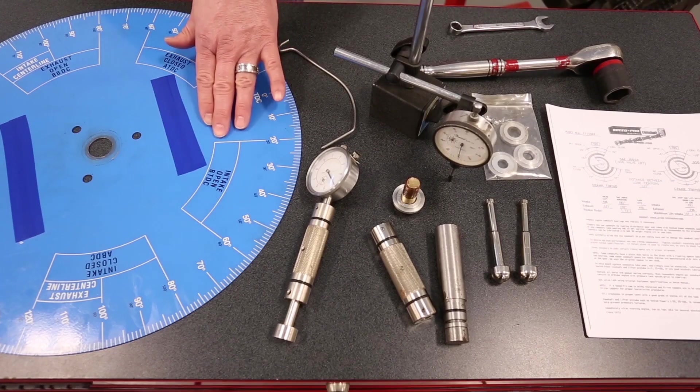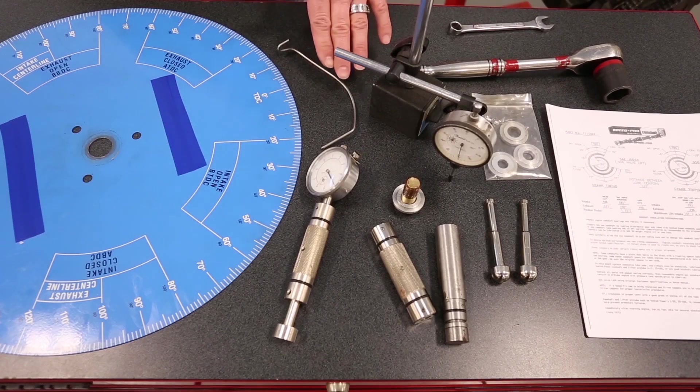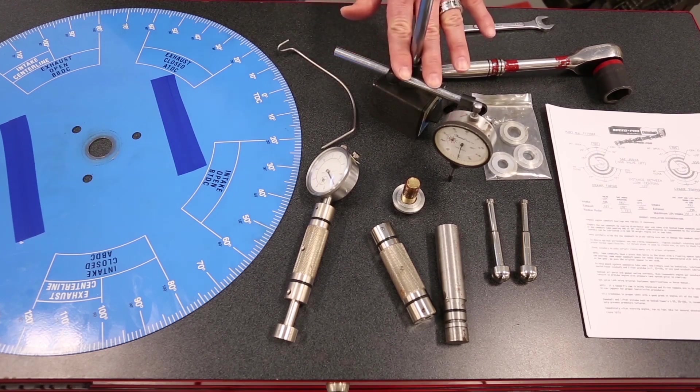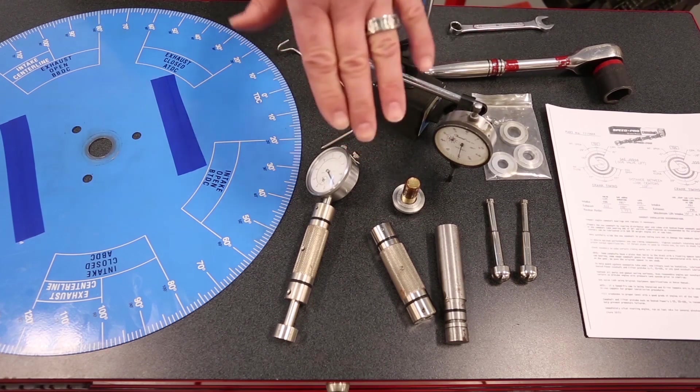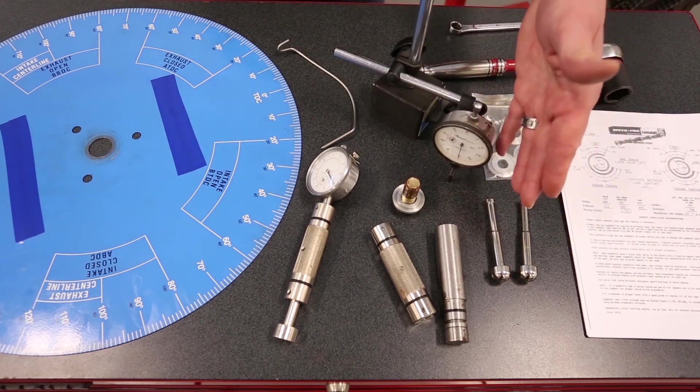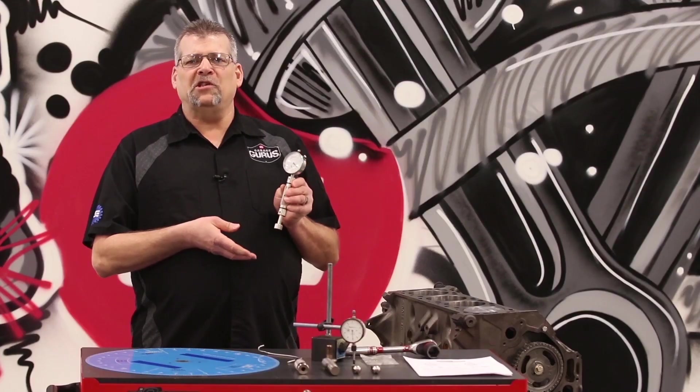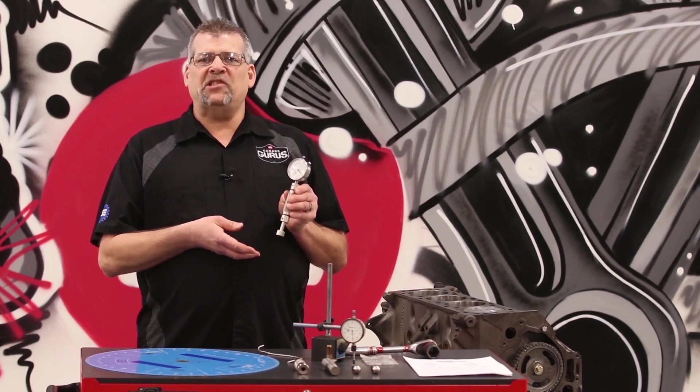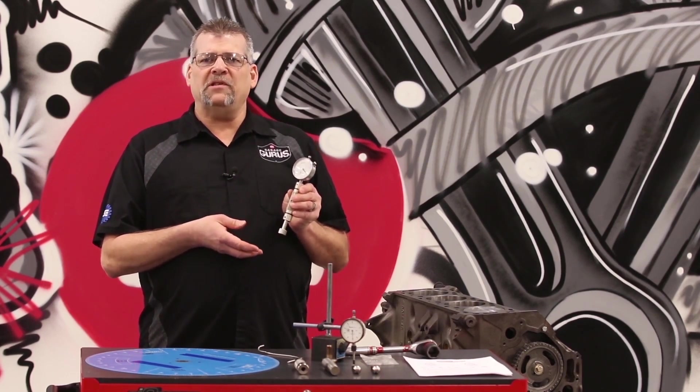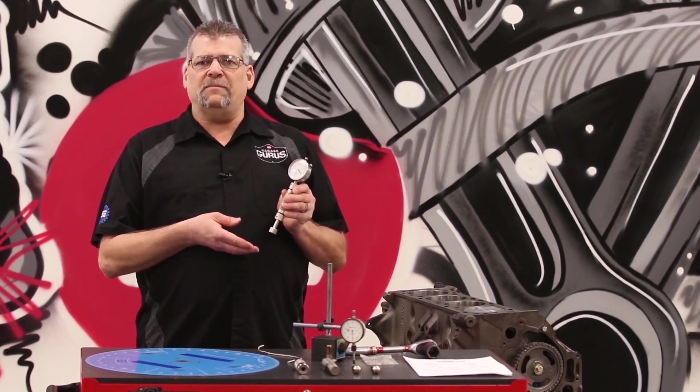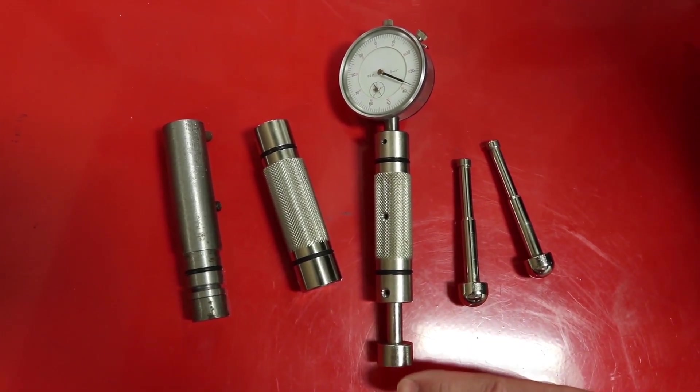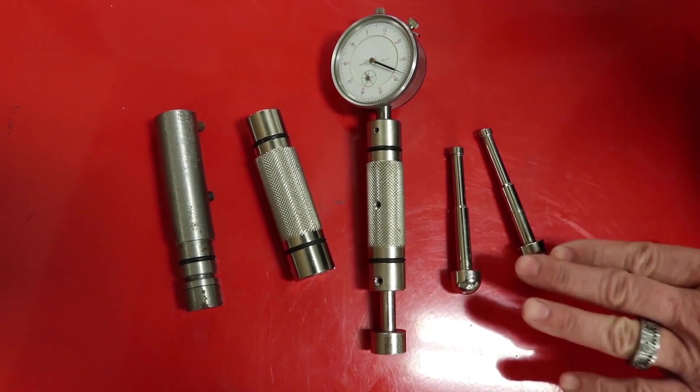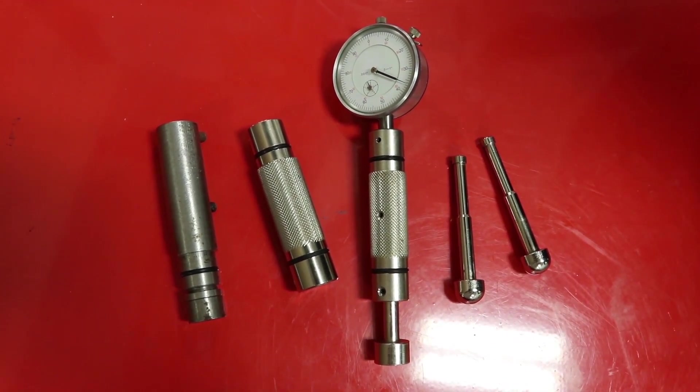For tools, you'll need a degree wheel, a piece of wire to make a pointer out of, a dial indicator to show piston travel, and a dial indicator adapted to show cam lobe lift for the type of cam being used. I'm using a special tool designed specifically for the purpose of reading cam lobe lift. This tool has several adapters to fit different lifter bore sizes as well as plungers for flat tappet or roller tappet cams.